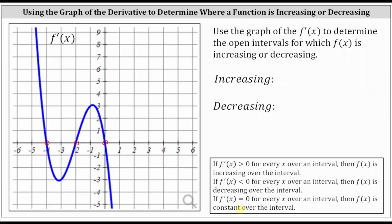Next, the first derivative is positive where the graph is above the x-axis, and the first derivative is negative where the graph is below the x-axis. Notice how the first derivative is positive to the left of x equals negative four, or when x is less than negative four.